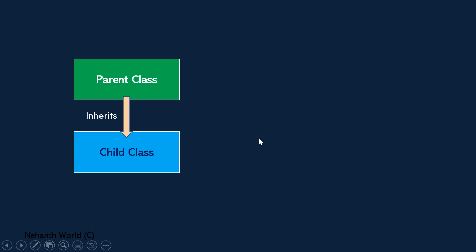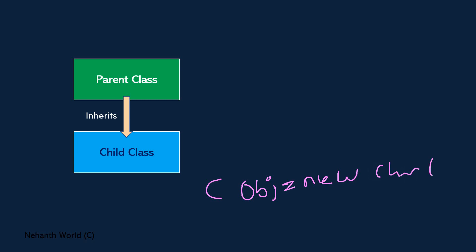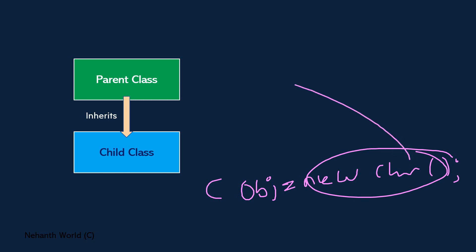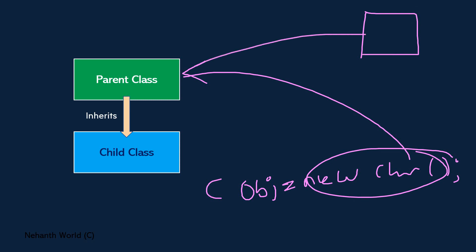Let us discuss the memory allocation process. Here you can see there is a parent class and a child class. The child class is inheriting from the parent class. Whenever you try to create an object for the child class — for example, 'child obj = new child class' — whenever we try to call the child class constructor, it will look for the top-level parent class and call its default constructor. When the parent class constructor is called, memory will be allocated for that parent class.